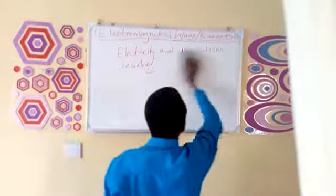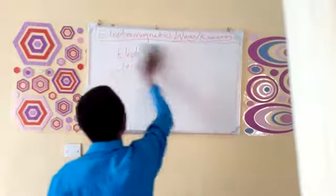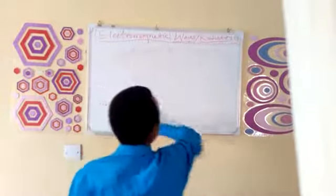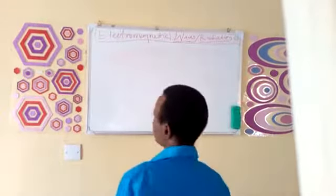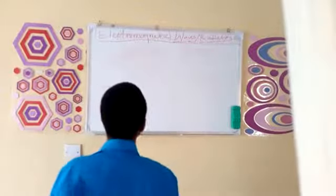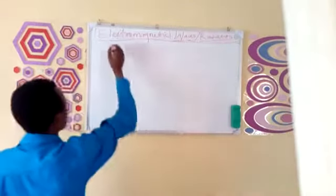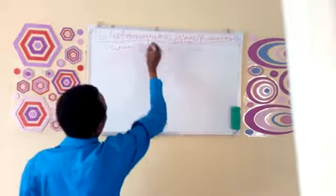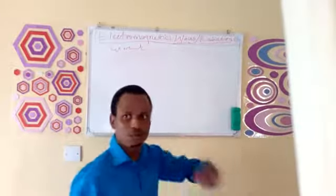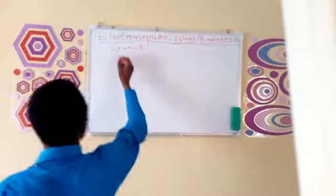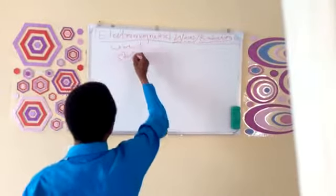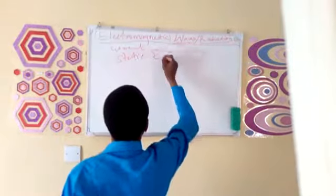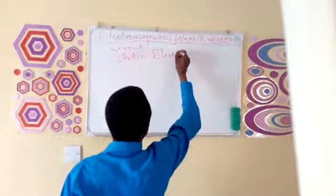So let us see what the electric part is. Electricity exists in two forms: we have current electricity where the charges are in motion and we have static electricity where the charges are not moving.